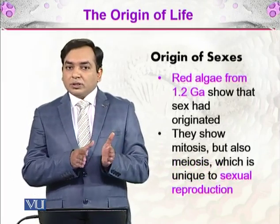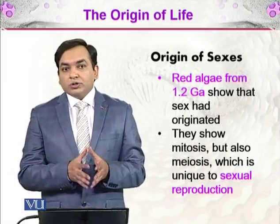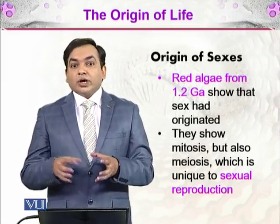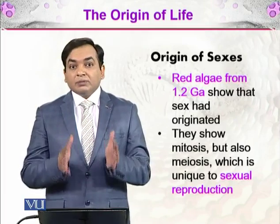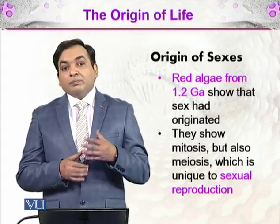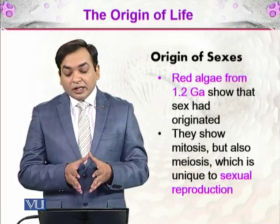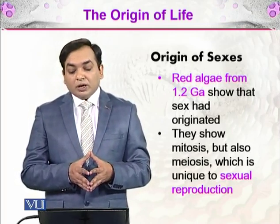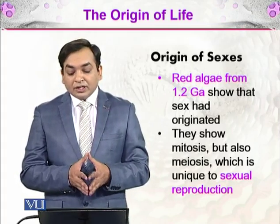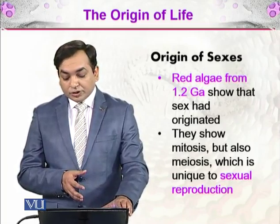There were prokaryotes first, then they became eukaryotes. The next stage was that eukaryotes began to build up their structures and became multicellular, and they also developed sexes. Red algae from 1.2 giga annum show that sex originated at that time — they show both mitosis and meiosis, which is sexual reproduction.